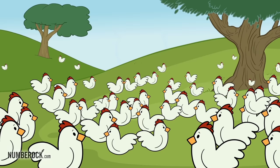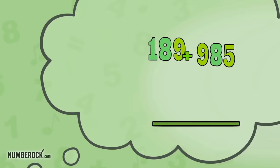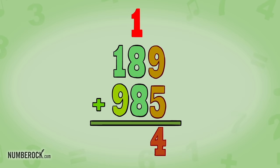189 hens are inside and 985 hens are outside. To find out how many hens are in the coop, we gotta know how to add and regroup. 9 and 5 is 14, write for the 10 carries. 1 plus 8 is 9, plus 8 is 17. Keep the 7,